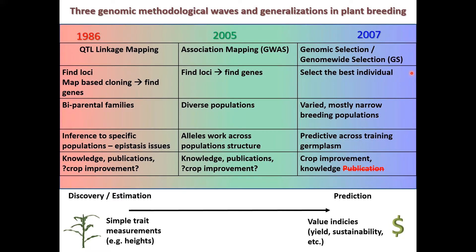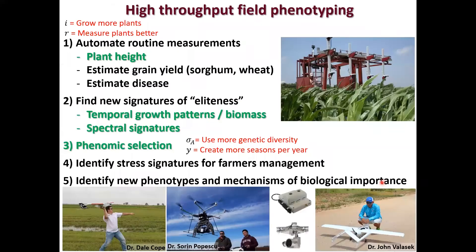Genomic selection is really good for knowledge generation and crop improvement. But unfortunately, now that those models have been developed, you can't really do much in graduate student training or publication. The overall trend here is one of discovery or estimation moving to prediction, and for an applied breeding program such as mine, that's really enticing.